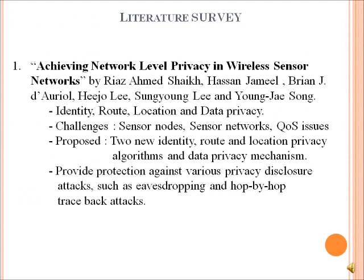Literature Survey. These are the papers I have read for the literature survey of this project. First: Achieving network-level privacy in wireless sensor networks, addressing identity, route, location, and data privacy challenges in sensor nodes and sensor networks. Quality of service issues are also discussed. The paper proposes two new identity, route, and location privacy algorithms and data privacy mechanisms.